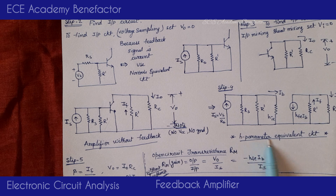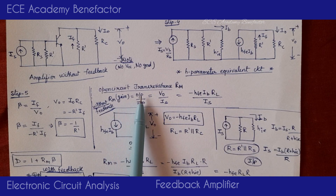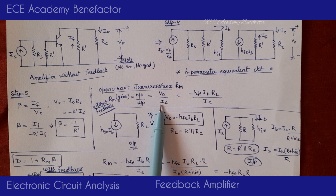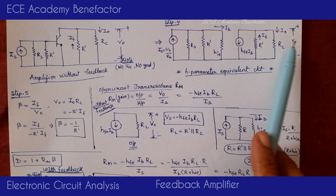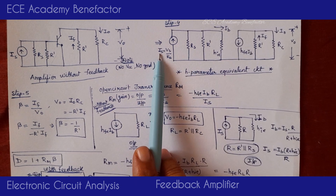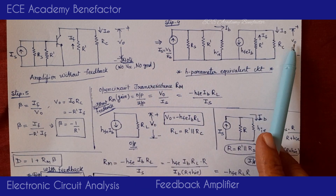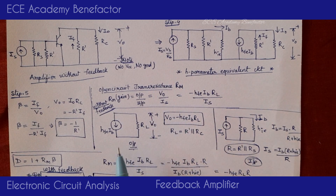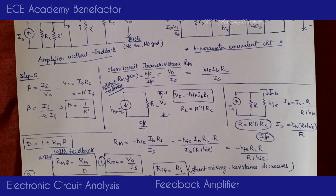This is the H-parameter equivalent circuit of the amplifier without feedback. The next step is to derive the open-circuit transresistance. Gain is output by input — the output here is voltage and the input is current, so RM = V0 / IS.